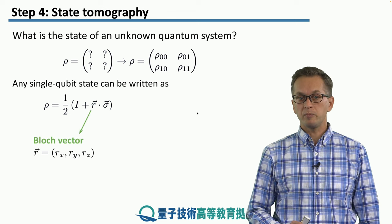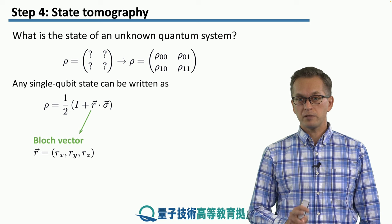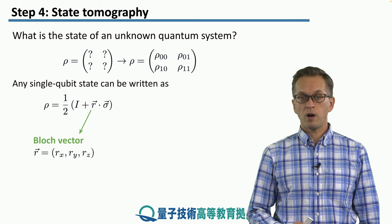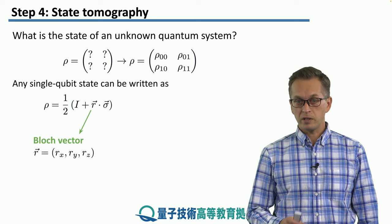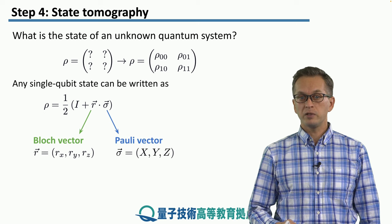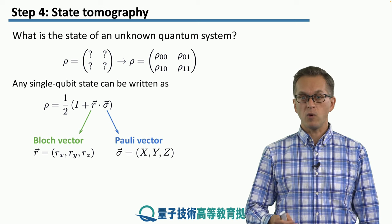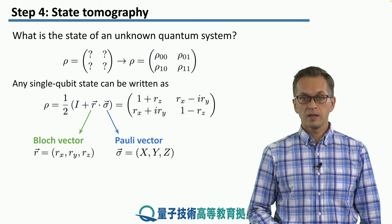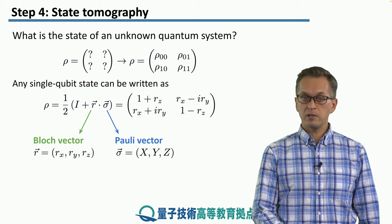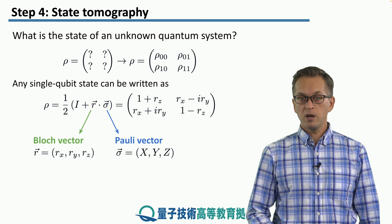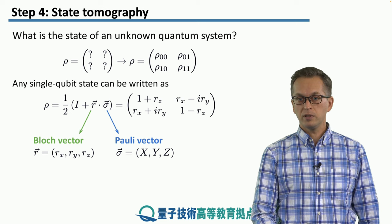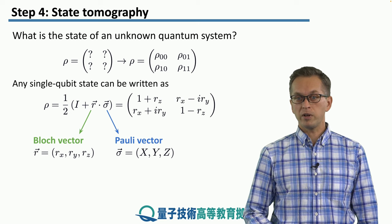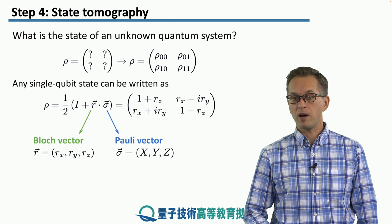r represents the Bloch vector. These are just three numbers: rₓ, rᵧ, and rᵤ, whereas the vector σ is the vector of the three Pauli matrices X, Y, and Z. In fact, if we substitute these two back into our expression for ρ, we find out that ρ can be written in terms of the Bloch vector components rᵤ, rᵧ, and rₓ.